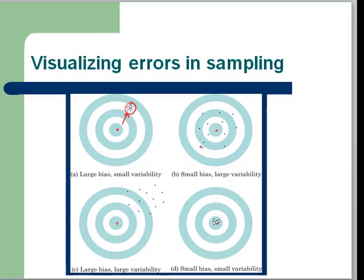In this next picture, we see small bias. There's no direction that we're consistently going. We're all over the place with our arrows here. We're missing the bullseye all over the place. And there's also large variability.